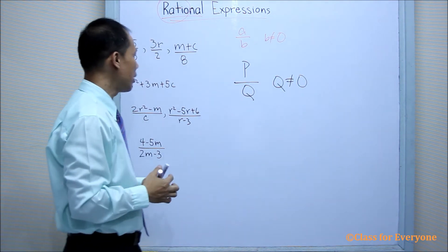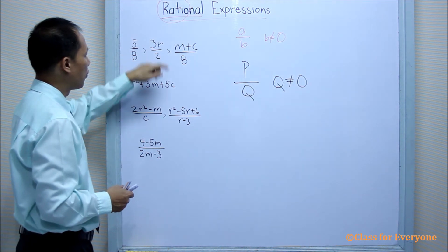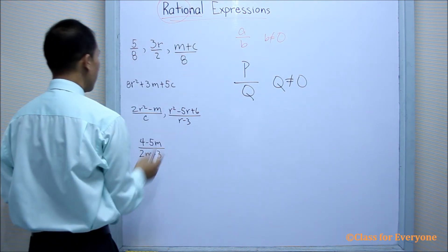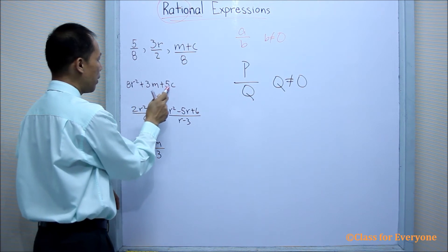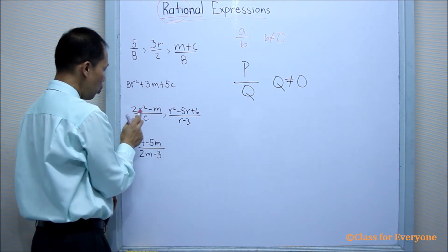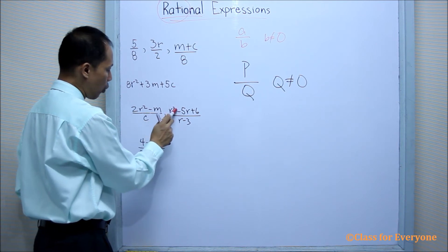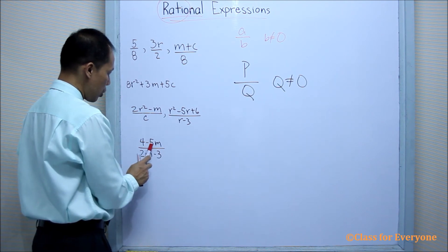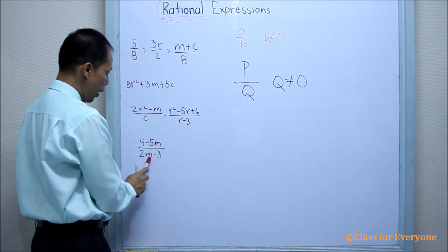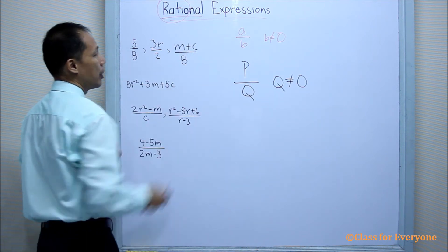And let us have an example like this one: 5H, 3R over 2, M plus C over 8, 8R squared plus 3M plus 5C, 2R squared minus M all over C, R squared minus 5R plus 6 all over R minus 3, 4 minus 5M all over 2M minus 3. All of these are examples of rational expressions.